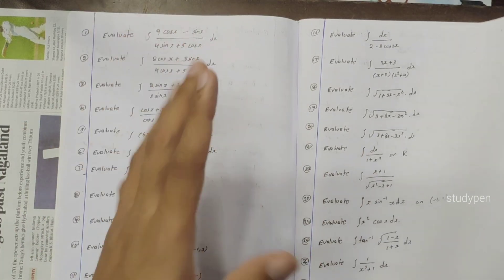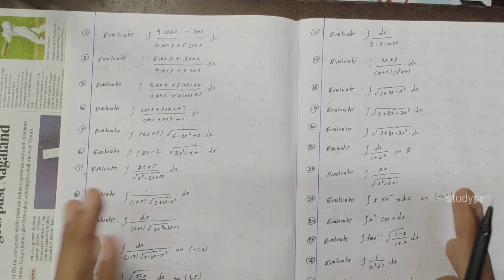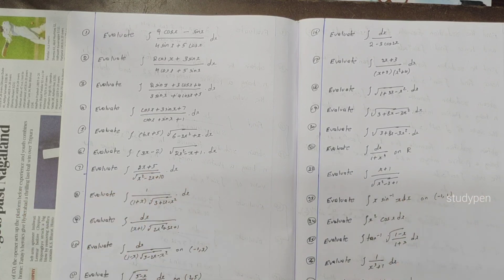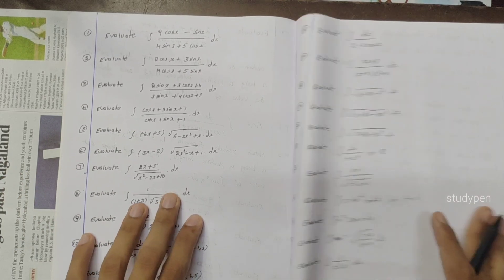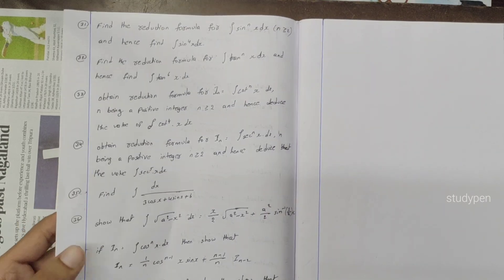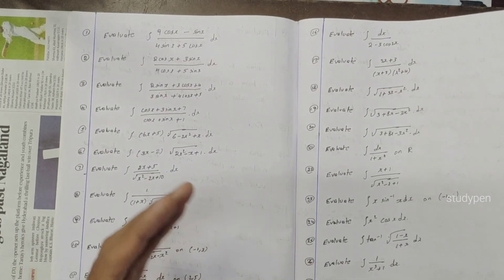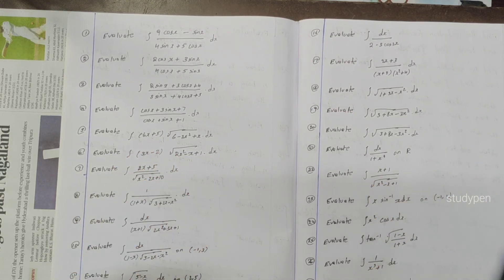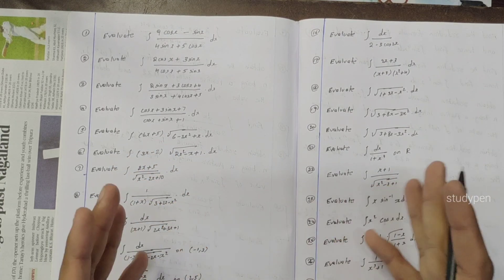Overall general theory questions and evaluate questions: 36 sums — very very important. You can check the sums. 7 marks plus 7 marks, 2 sums, 14 marks total.